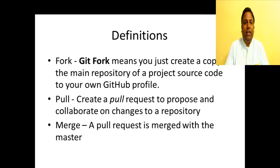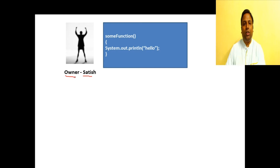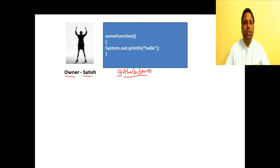I have created a visualization for better understanding. Consider a GitHub user named Satish — I call him the owner because he owns a GitHub repository. The name of this repository is 'github-demo'. Satish maintains a simple Java class file with a method that prints a hello message to the user.